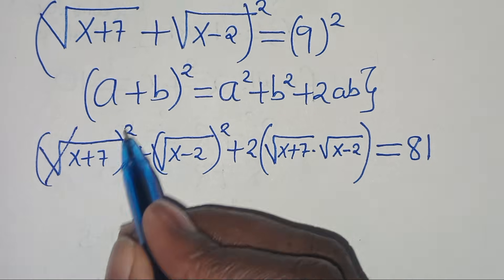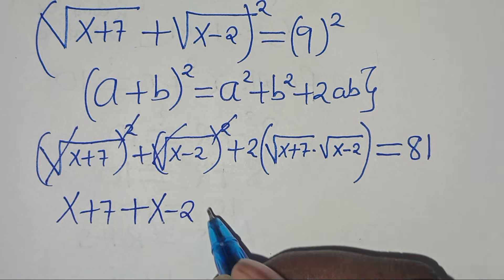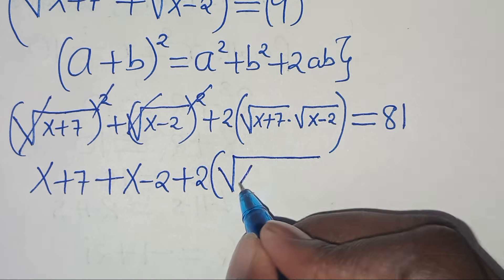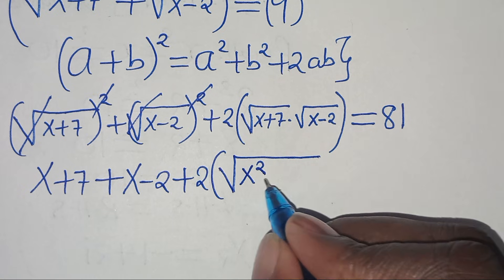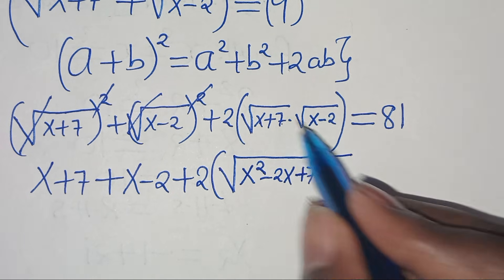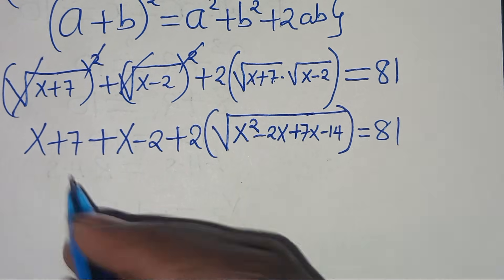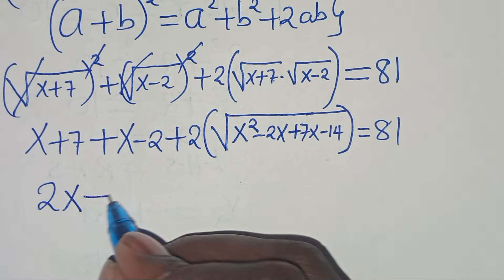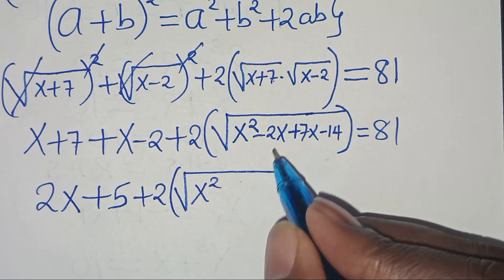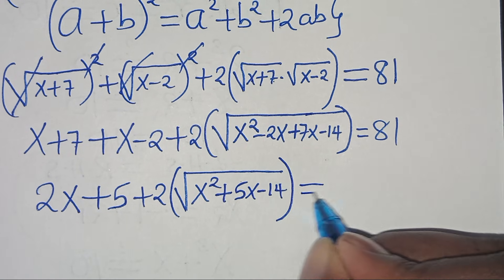Eliminating the square root signs on the squared terms: (x+7) plus (x−2) plus 2 times the square root of (x+7)(x−2) equals 81. Expanding inside the square root: x² minus 2x plus 7x minus 14, which simplifies to x² plus 5x minus 14. So we have 2x plus 5 plus 2·√(x² + 5x − 14) equals 81.